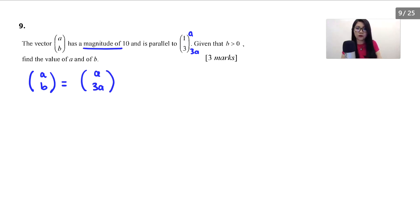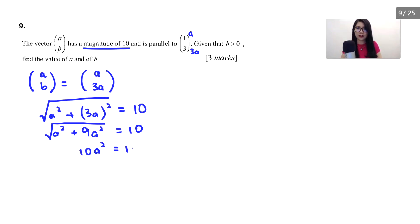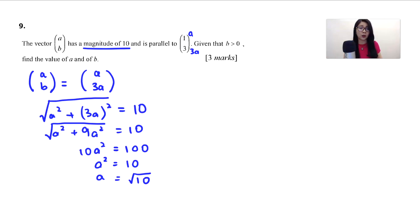They have a magnitude of 10, so we find the magnitude: square root of (a² + (3a)²) equals 10. That gives square root of (a² + 9a²) equals 10, which is square root of 10a² equals 10. Moving the square root to the right, it becomes 10a² equals 100, so a² equals 10. Therefore a equals square root of 10. Since b is positive, a must be positive as well, so a equals root 10.